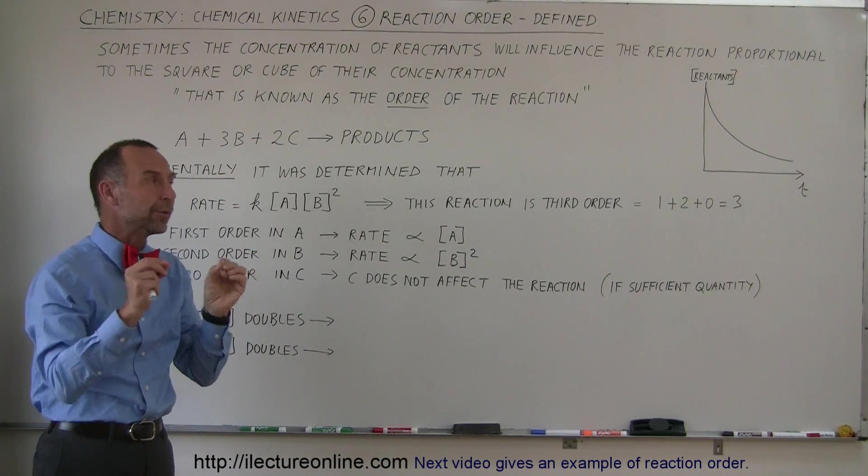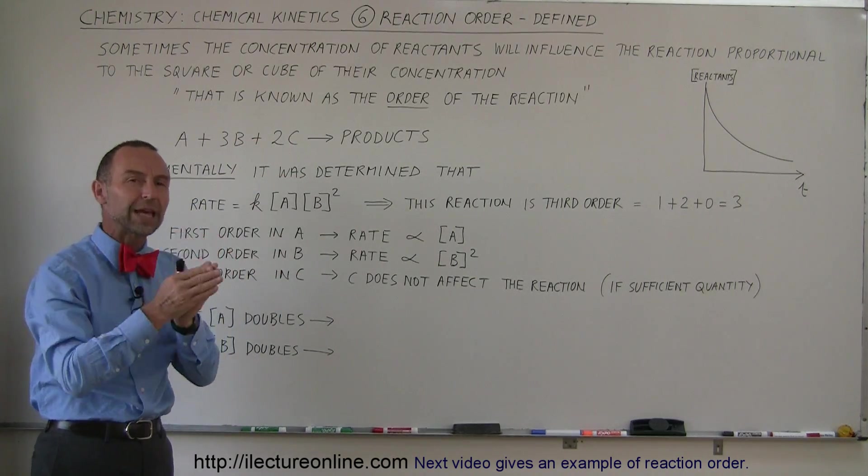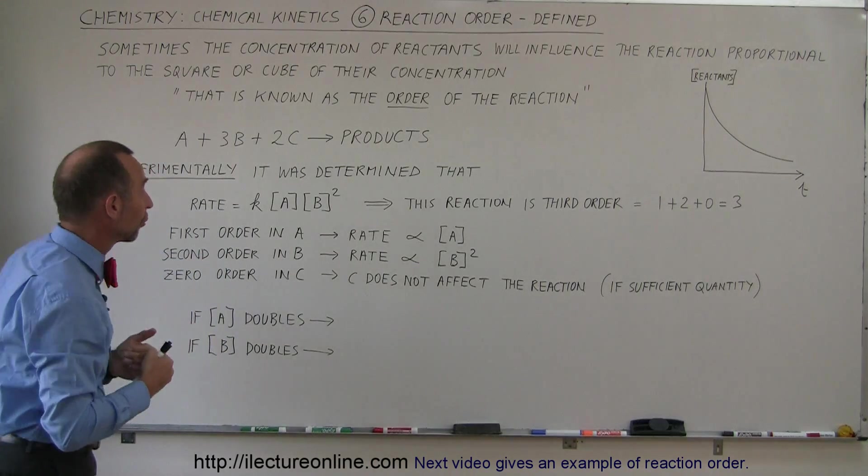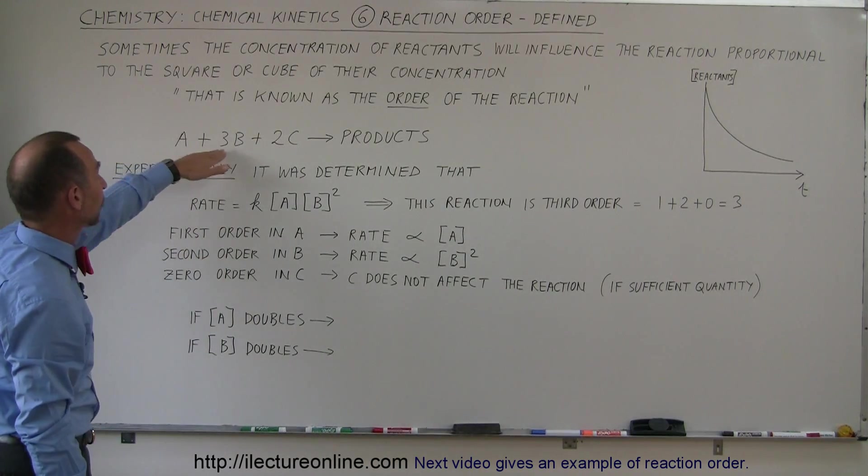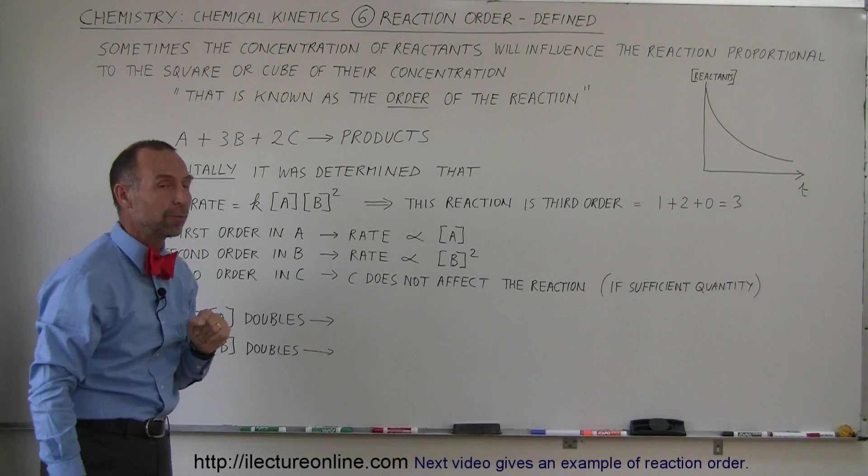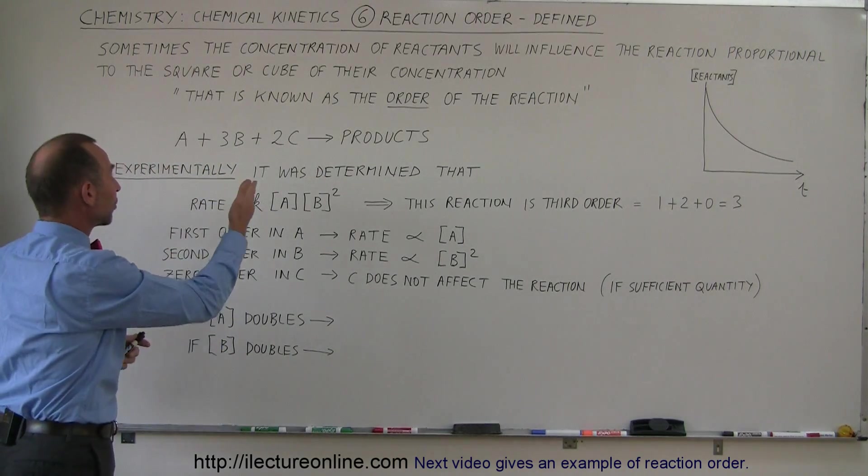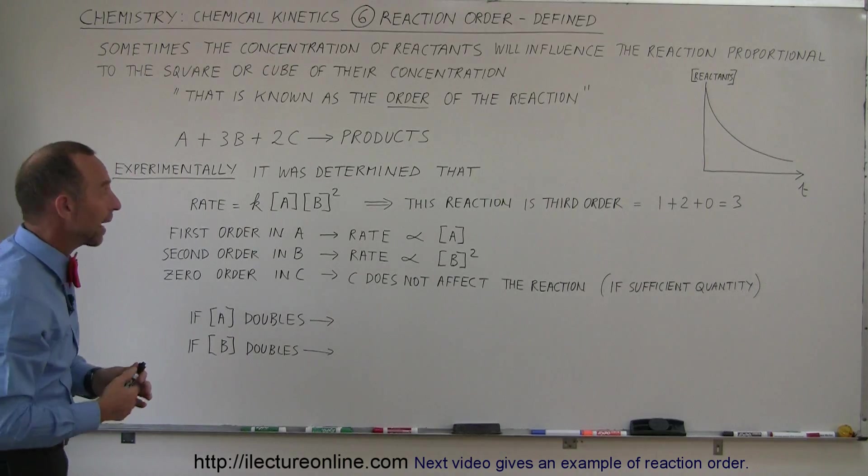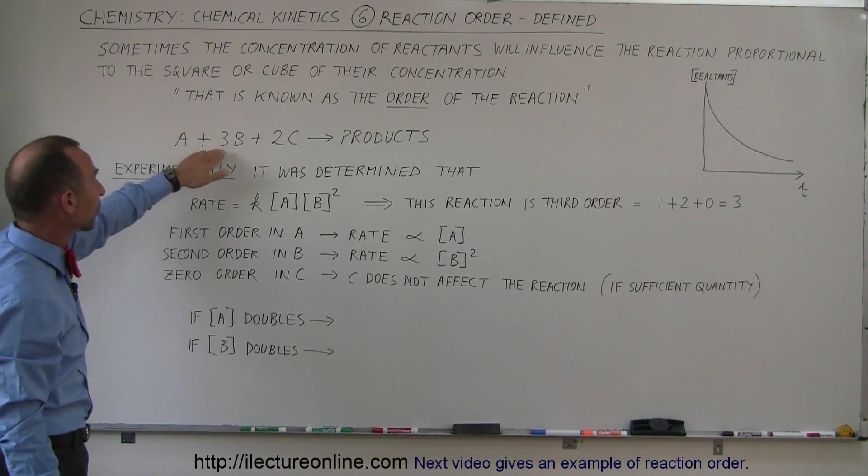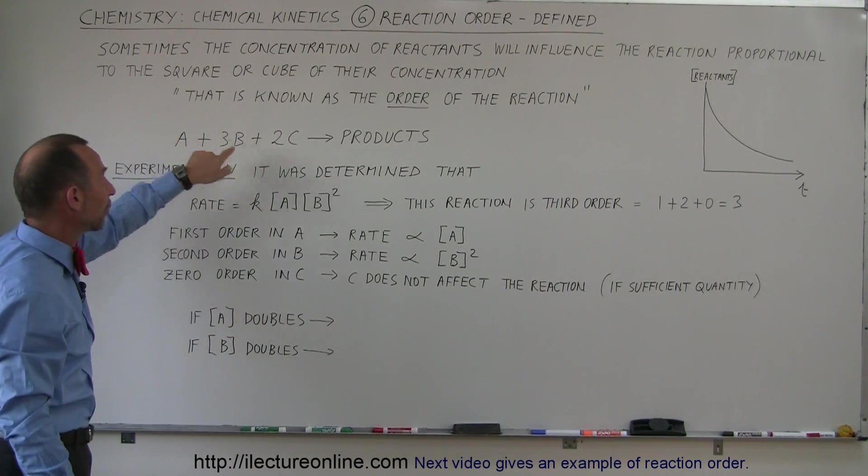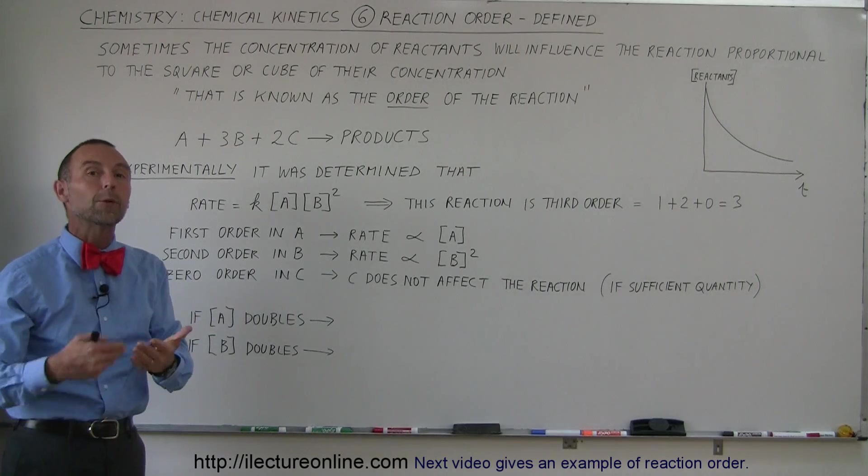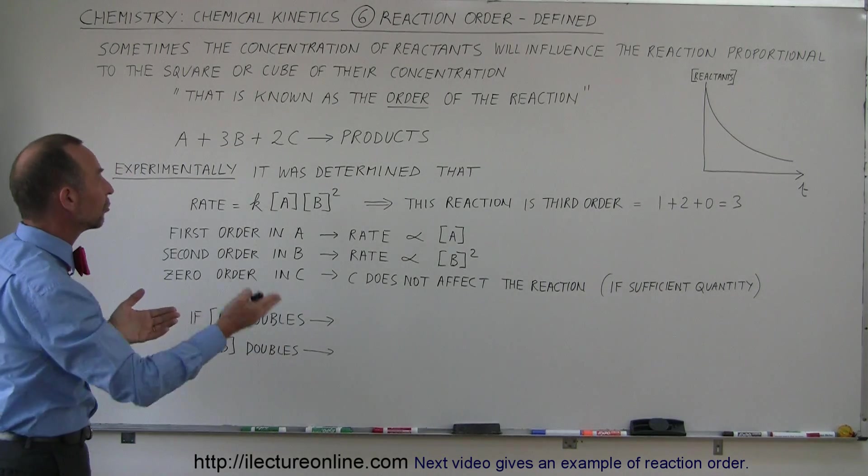And of course if there's more than one reactant we have to add the orders together, one for each reactant. So for example let's say we have the reaction A plus 3B plus 2C produces some products. Now A, B and C are some sort of molecule or some sort of atom. 1, 3 and 2 - I didn't write the one here but the coefficients here of course represent the number of moles you have to have in relation to everything else.